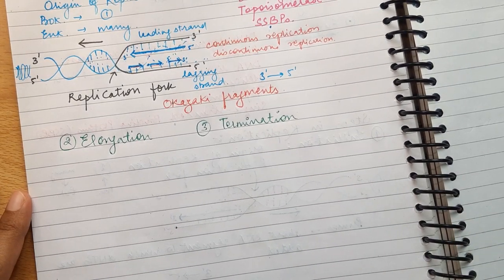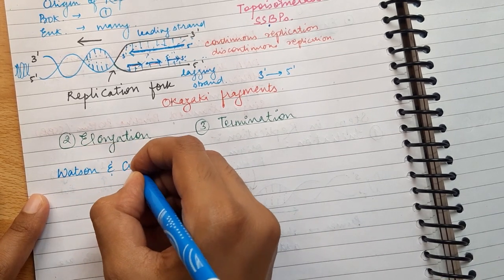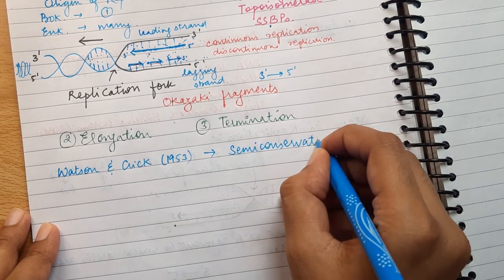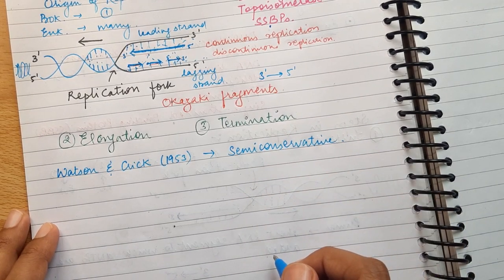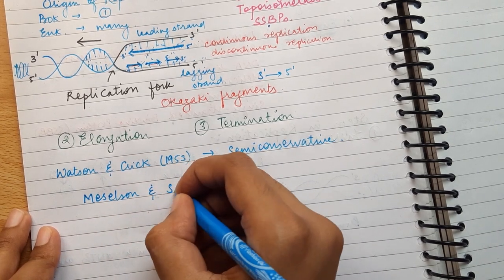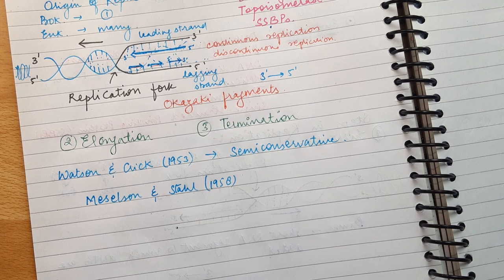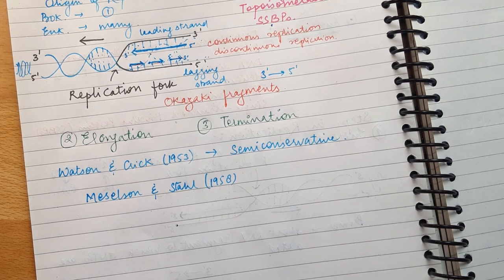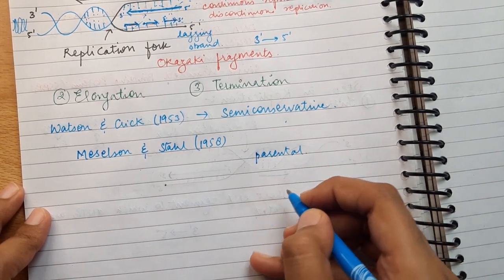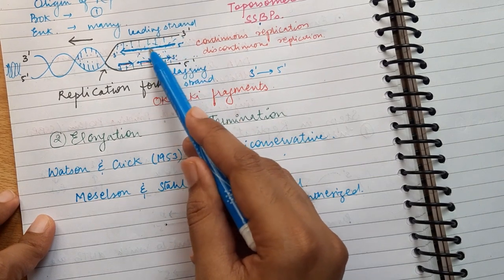And the last step is termination. Now replication is terminated when two replication forks meet each other. Now there were two scientists, namely James Watson and Francis Crick, who also gave the double helical structure of DNA. So they suggested that this process of replication is semi-conservative in nature. This was later experimentally proved by Matthew Meselson and Franklin Stahl in 1958, and their experiment is very popular and is also known as Meselson-Stahl experiment. Now this semi-conservative replication means that in a duplicated DNA molecule, one strand would be parental and the other one would be newly synthesized strand. This one is the parental and this one is the newly synthesized.